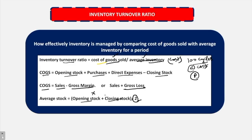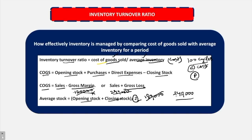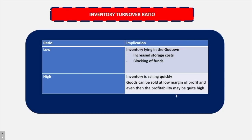For example, if opening stock is 1,20,000 and closing stock is 2,40,000, the total stock is 3,60,000, divided by 2 gives 1,80,000 as average stock. If opening stock is not given and only closing stock of 2,40,000 is available, then you take 2,40,000 to be the average stock. You can write down this formula so that when we take a lot of MCQs, it will be beneficial for you.